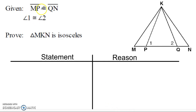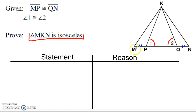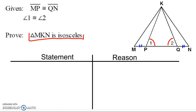The first thing I always want to do when looking at a proof is mark up my picture. They tell me that MP is congruent to QN — that's this little piece here and this little piece here — and also that angle 1 is congruent to angle 2. I'm looking to prove that triangle MKN is isosceles. MKN is this large triangle here, and to prove it's isosceles I'll have to prove that this side is congruent to this side.